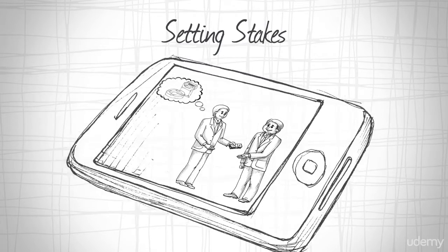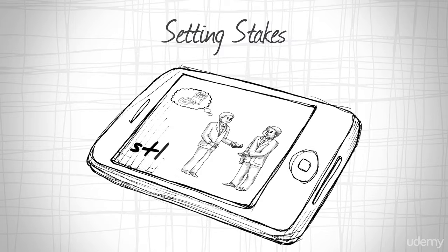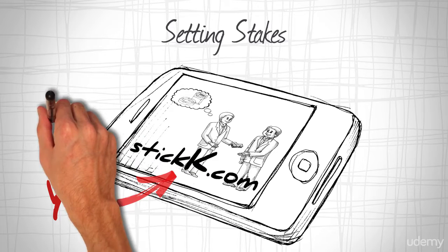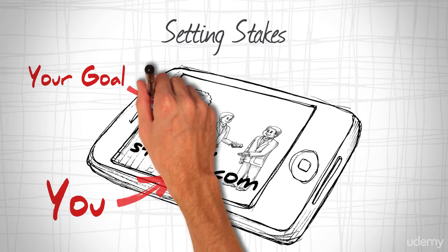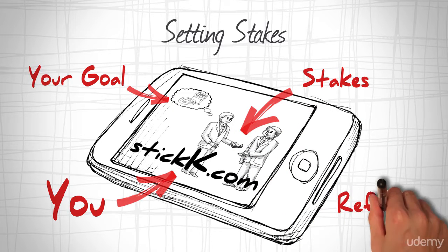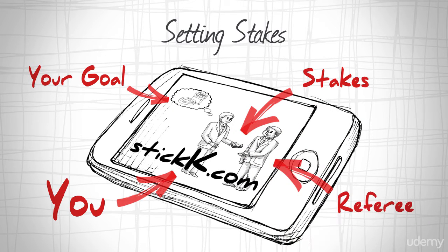Instead of giving your friend a check, you can use stickk.com. It's a website that helps you stay accountable. You set a specific goal and set stakes for it if you don't reach it. You can also appoint someone as referee who will keep you accountable.